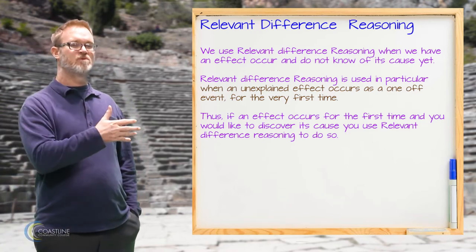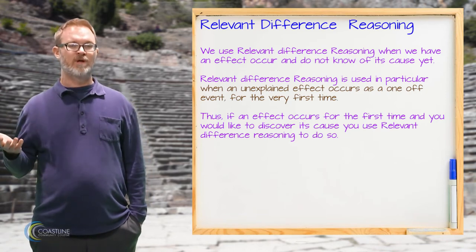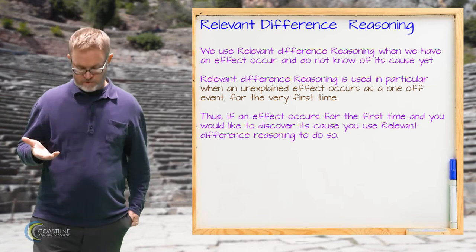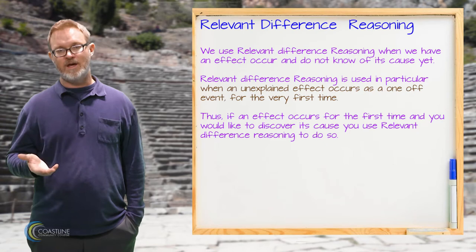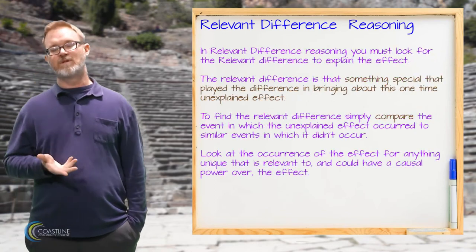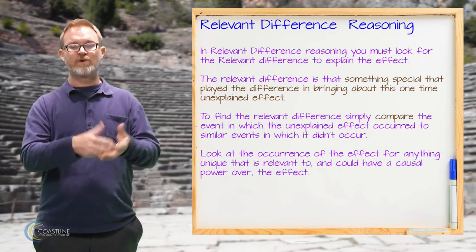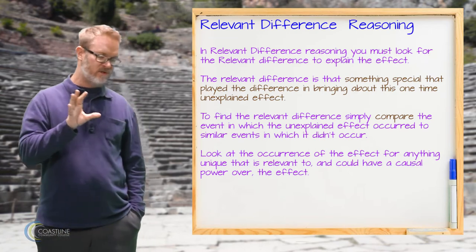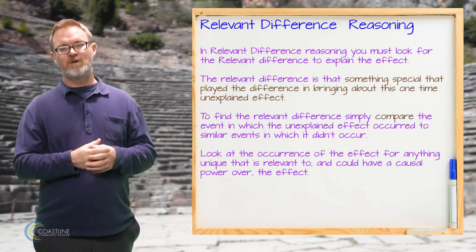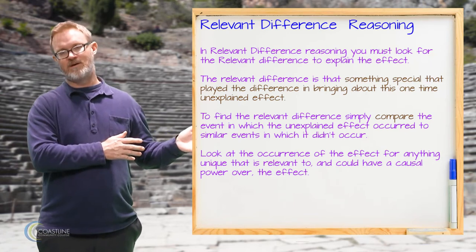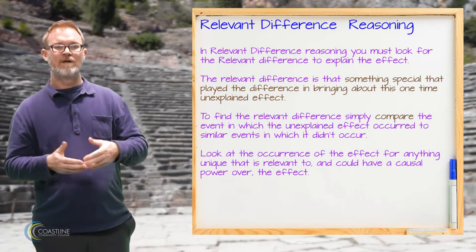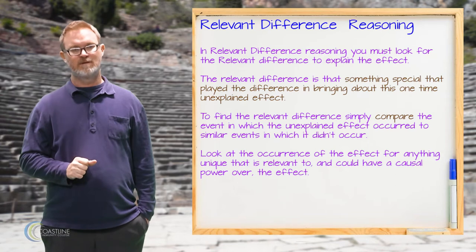Going back to the headache example: you wake up in the morning all of a sudden with a headache. This is a good example of when to use relevant difference reasoning. What we want to do is try to explain the possible cause of that headache. What we're looking for is the relevant difference — the difference that has the causal power to make that effect. You're searching for similar circumstances to this morning when you woke up with the headache, and looking for similar circumstances in which you didn't have the headache. That difference between when you didn't have the headache and now is the cause — the relevant difference.